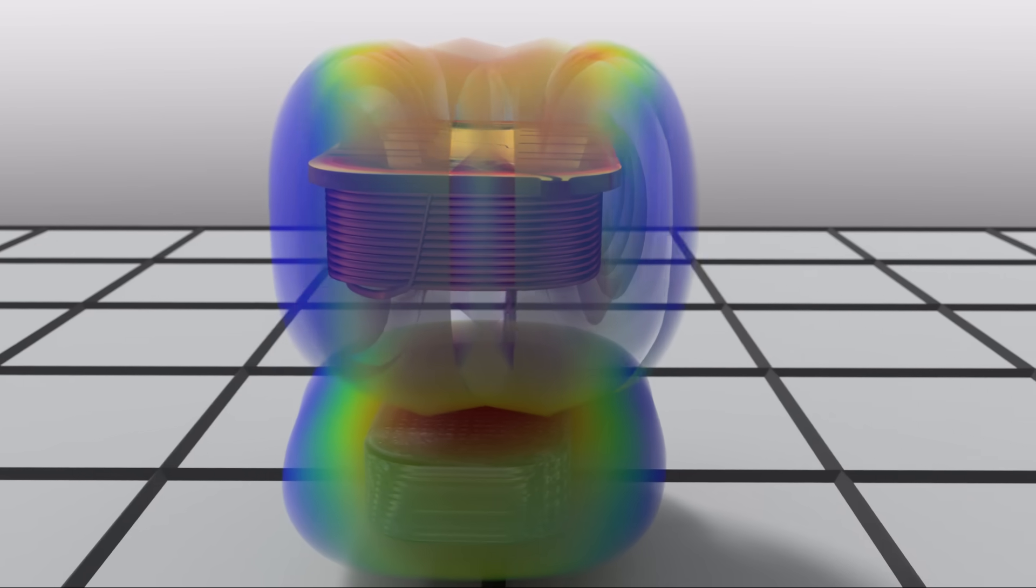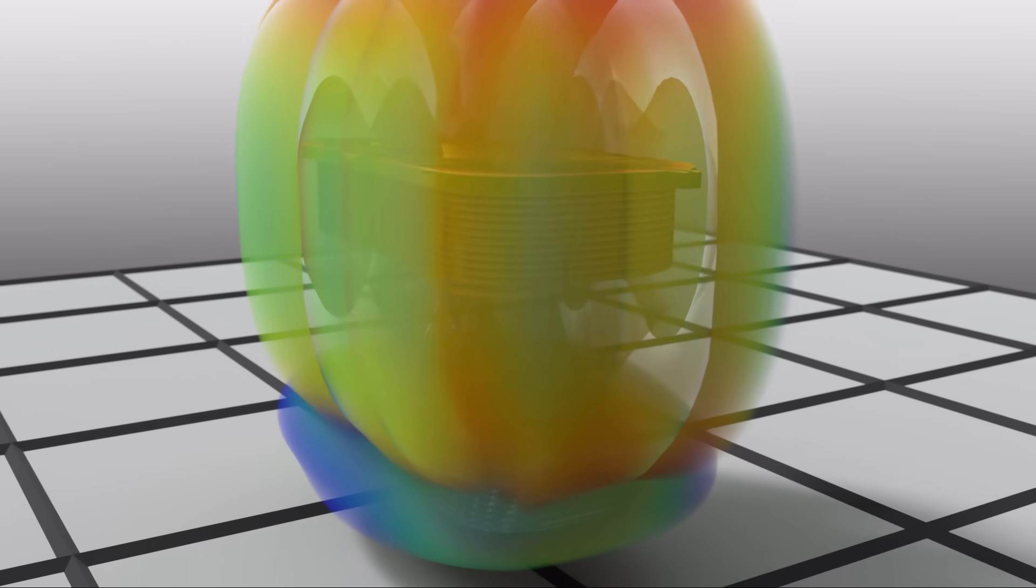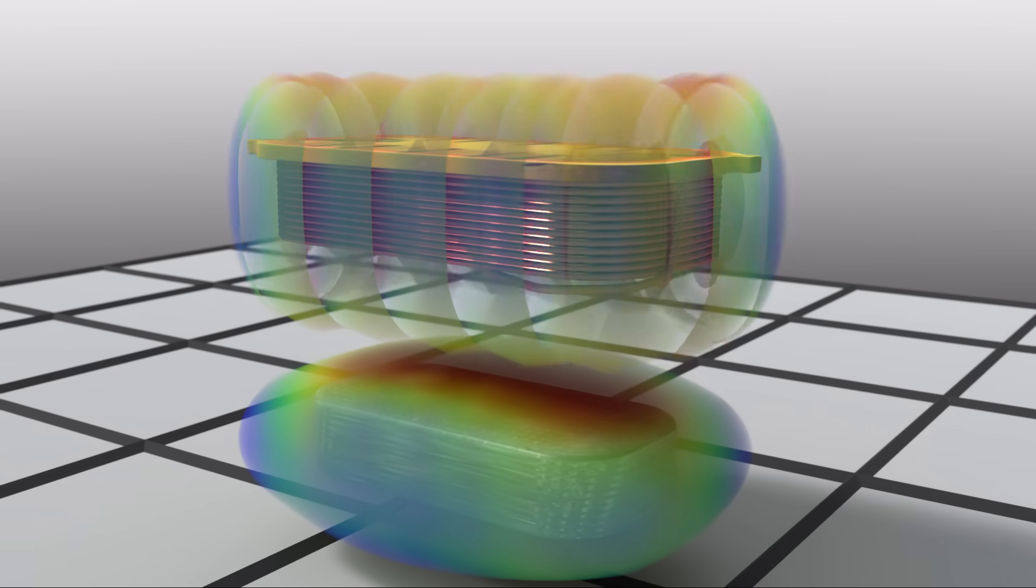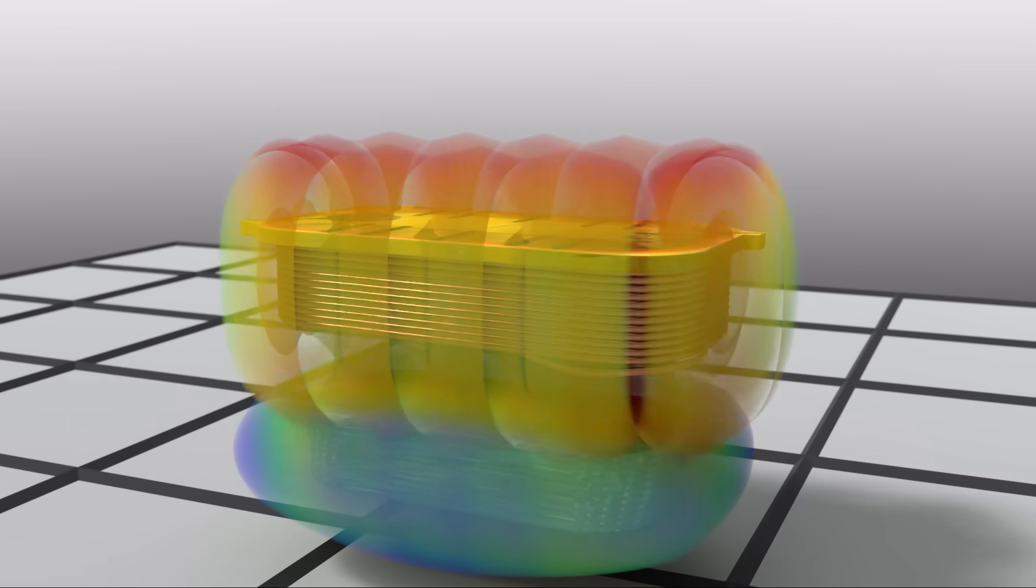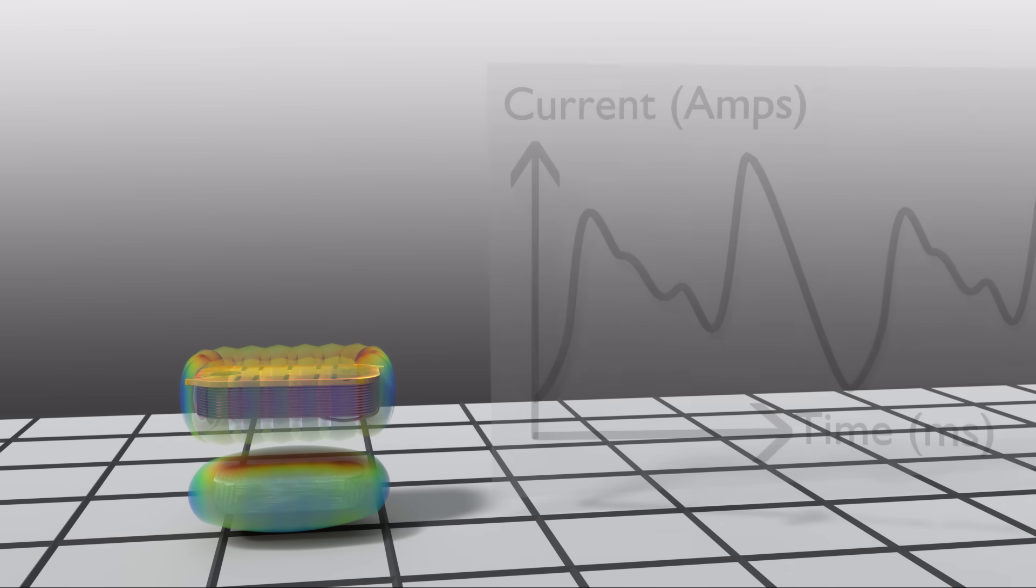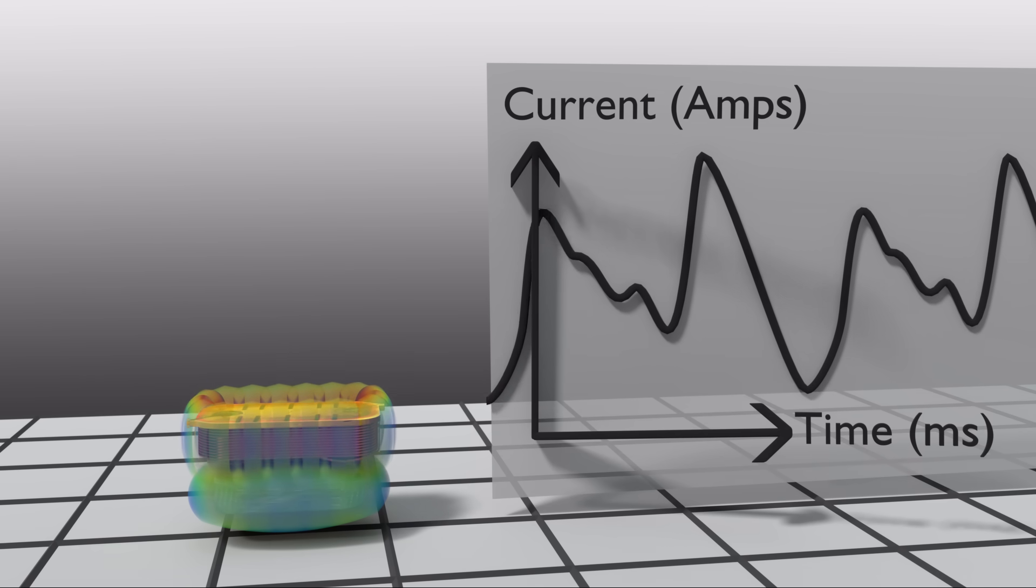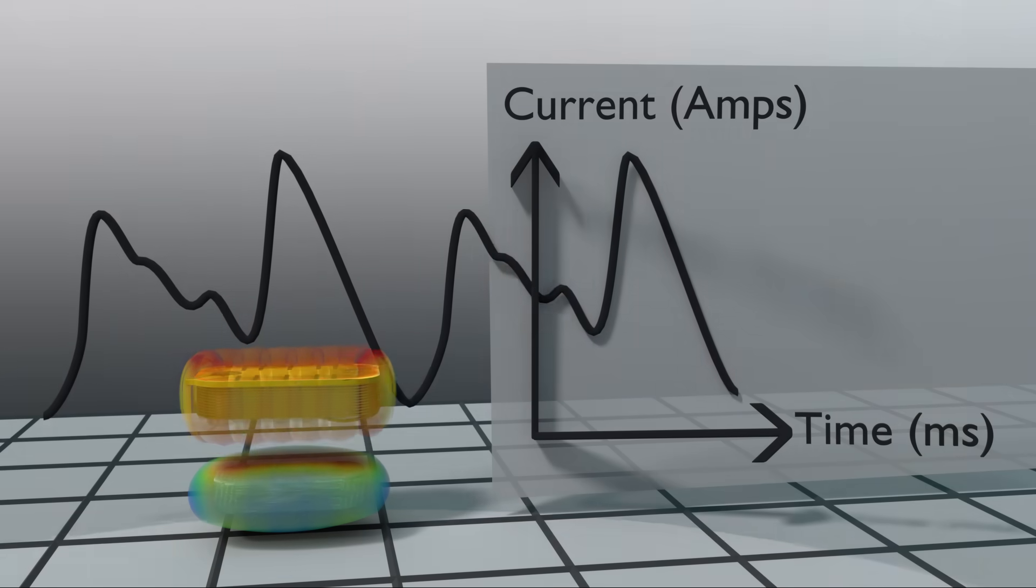When the amount of current running through the coil changes, it also changes the shape of the coil's temporary magnetic field. This in turn changes the position of the coil and diaphragm. Thus, when a waveform of current is run through the coil, the diaphragm will move accordingly, and the pressure waves generated by the diaphragm will result in the corresponding sound waves.